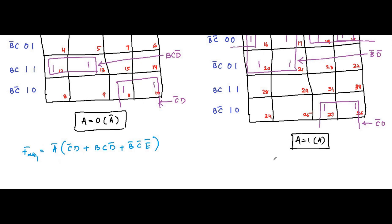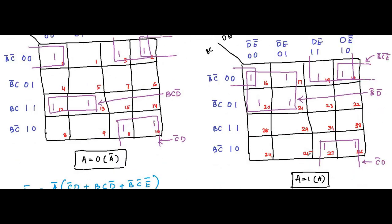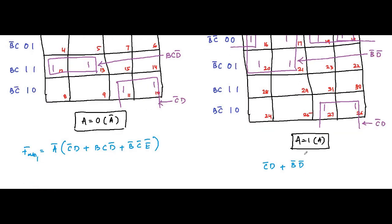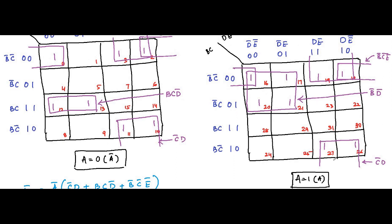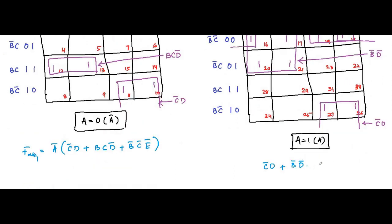For the second K-map, the common variables give: C-bar D + B-bar D-bar + B-bar C-bar E-bar, and we take A as common. This is the second minimized Boolean expression.